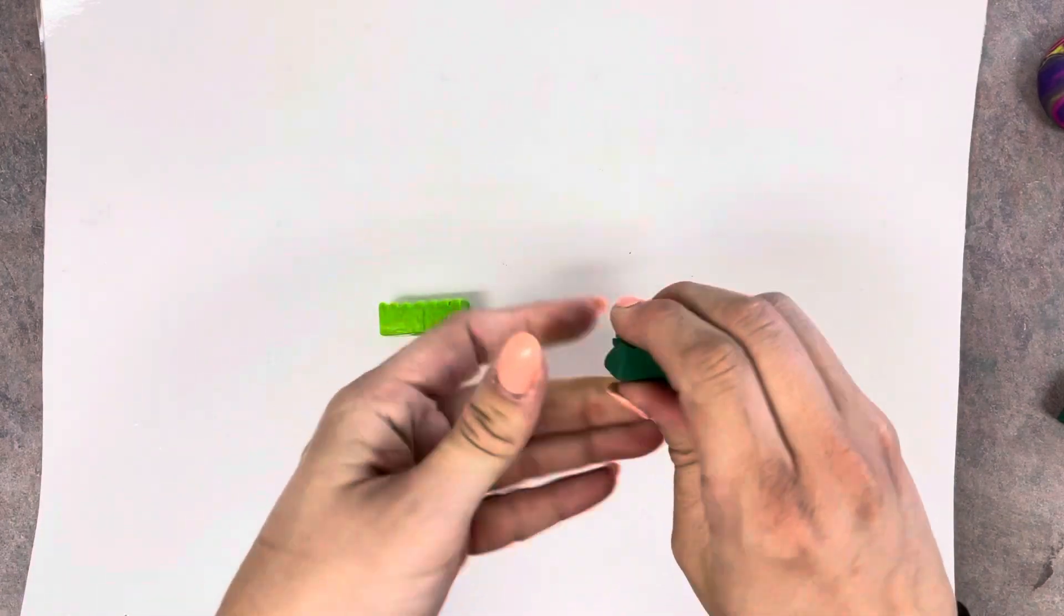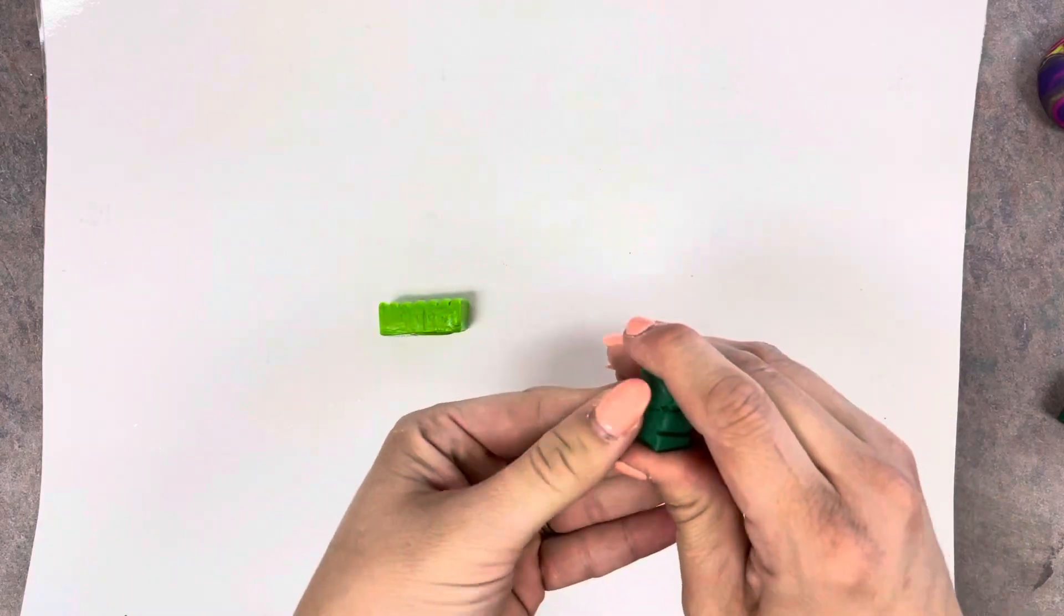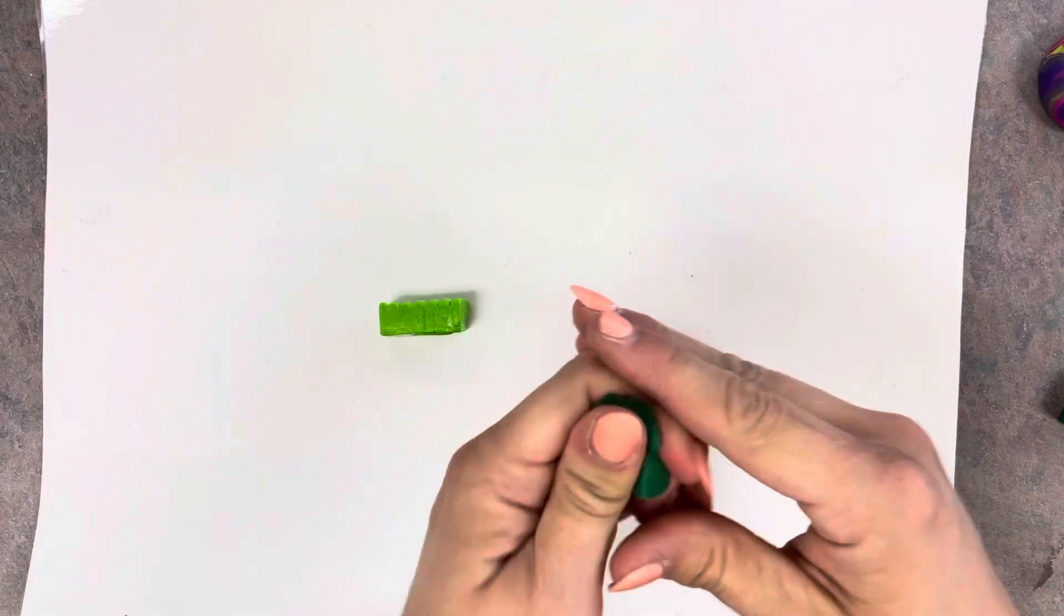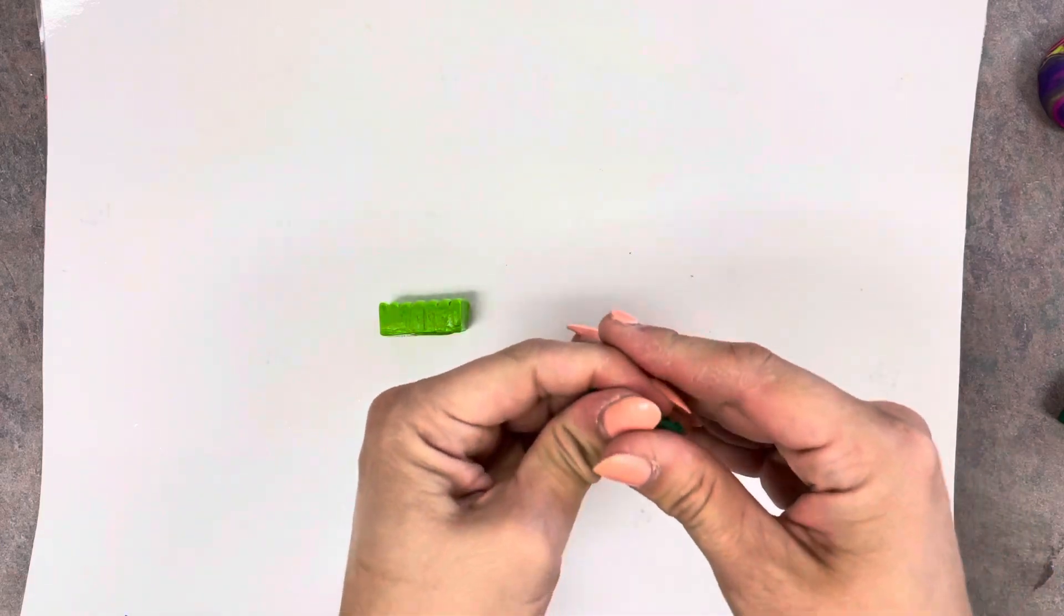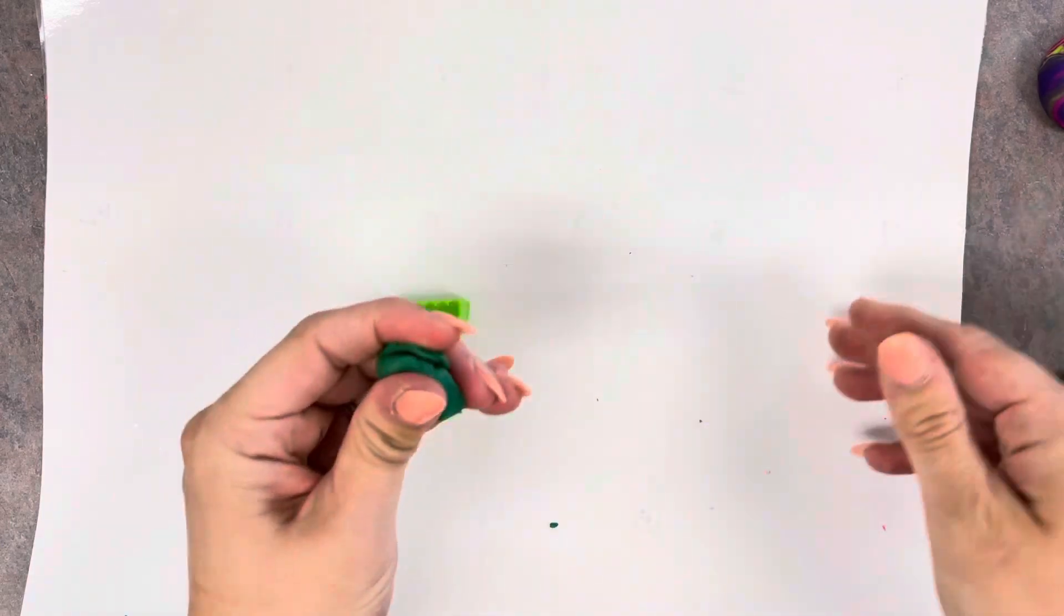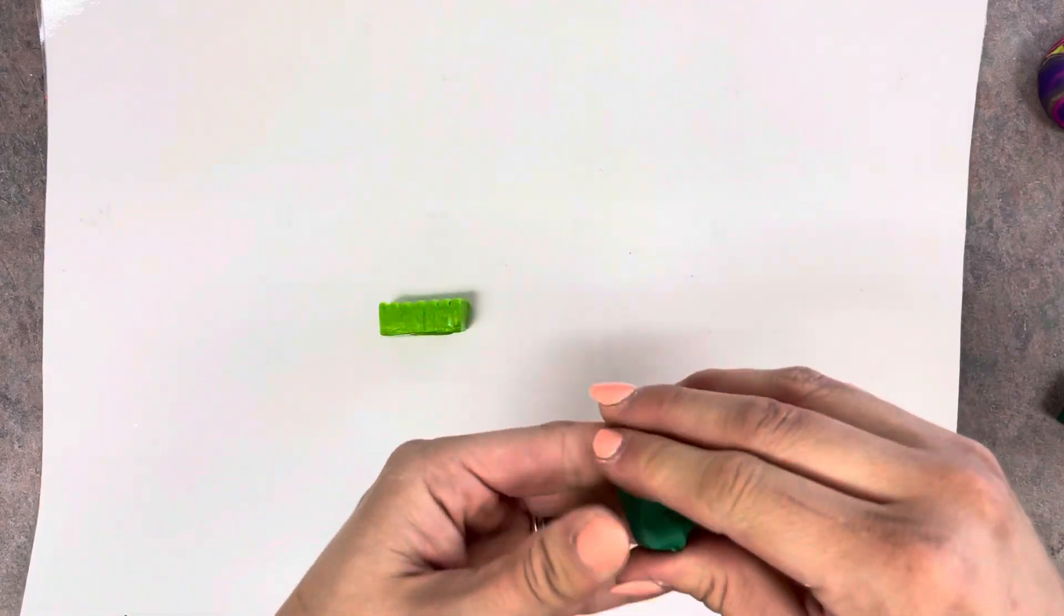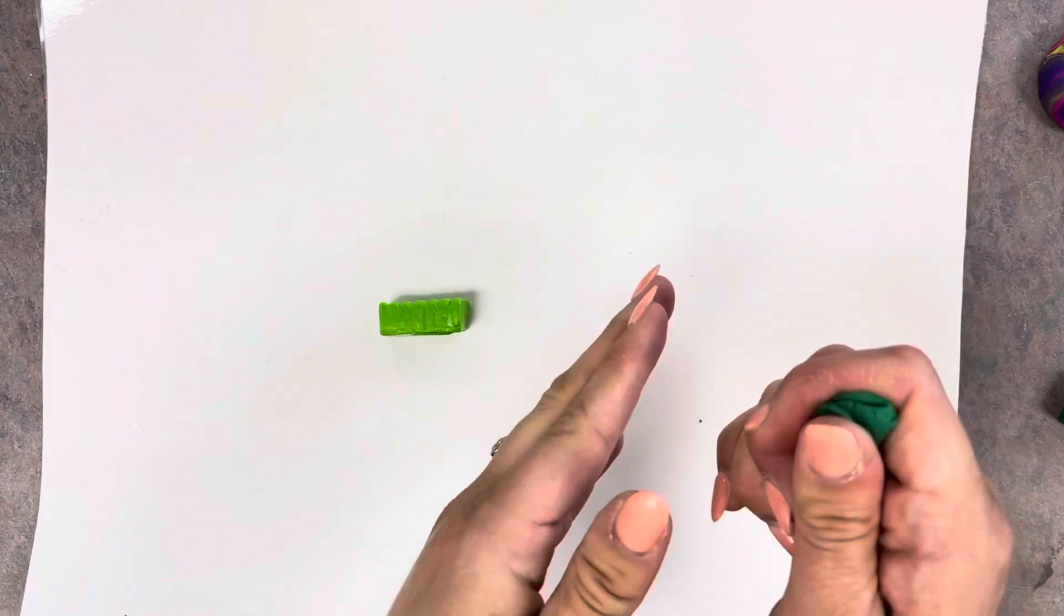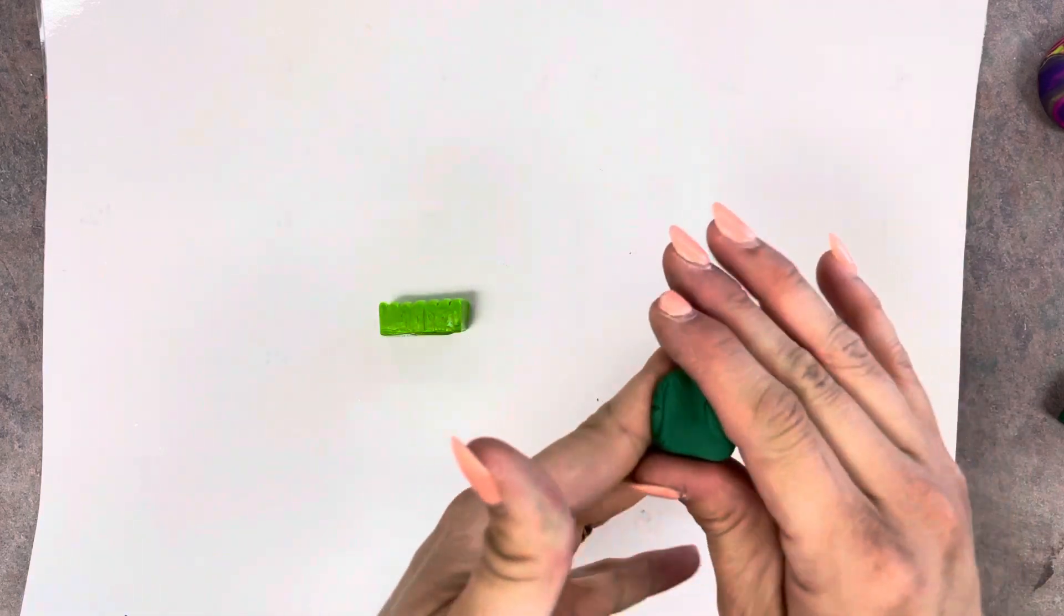This clay starts off really hard, so you have to knead it together with your hands. You have to use some muscle to begin with. The more you press it together and knead it in your fingers, the warmer and softer it gets. Knead it for a while until it's nice and soft, and do this with both pieces.